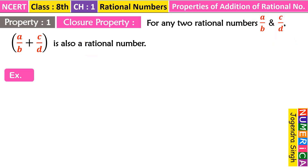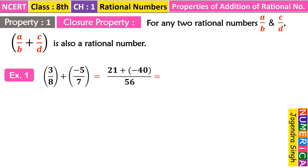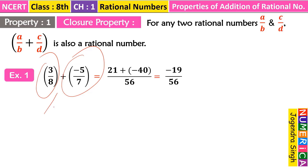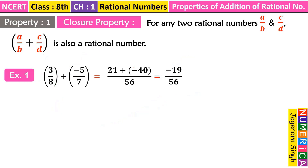We have an example: 3/8 + (−5/7). After taking LCM we get (21 − 40)/56, which gives us −19/56. Previously both are rational numbers, we added them, and the result −19/56 is also a rational number. So addition of rational numbers is also a rational number.